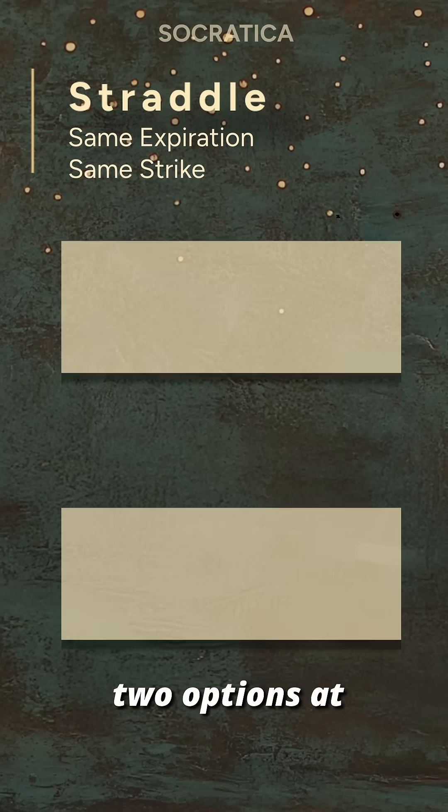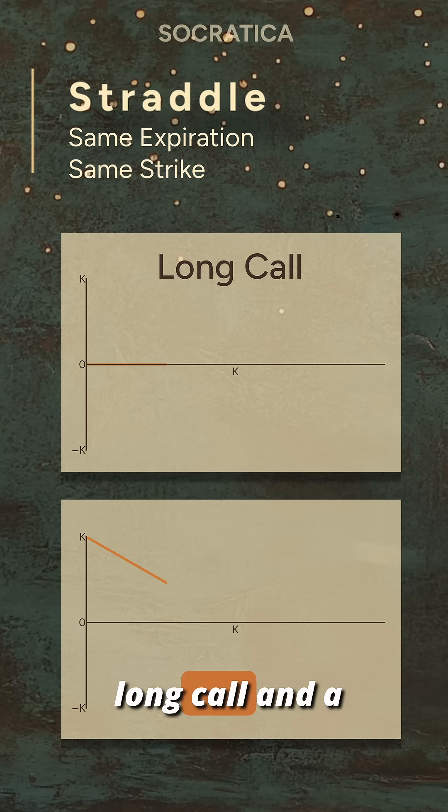To build a straddle, you buy two options at the same time. A long call and a long put. Same strike, same expiration.